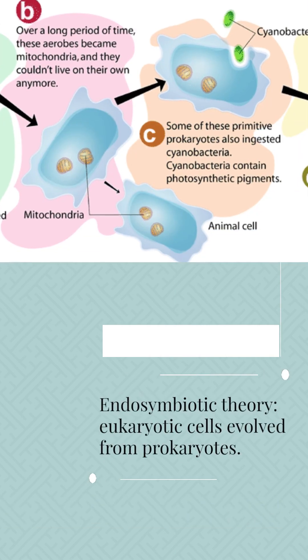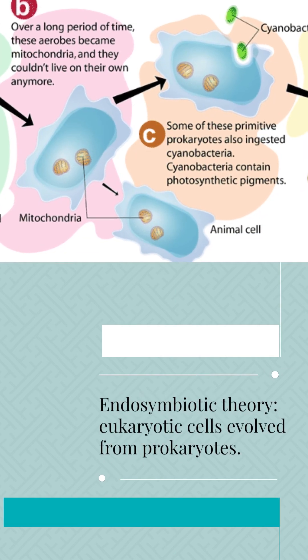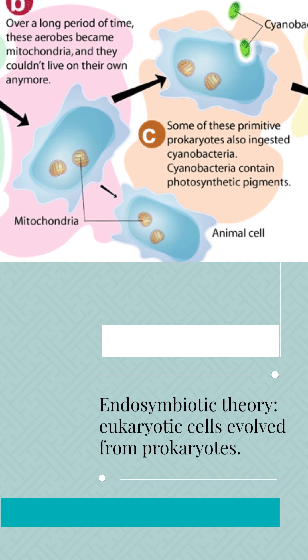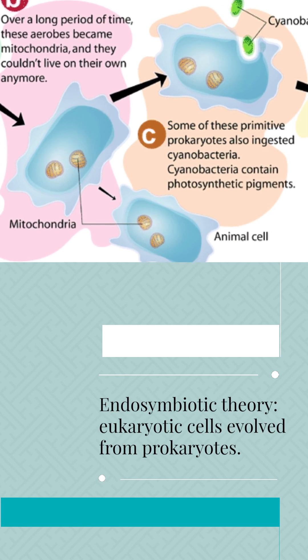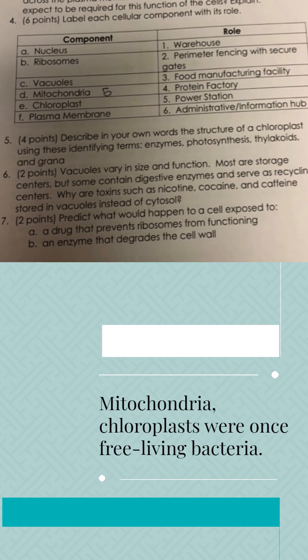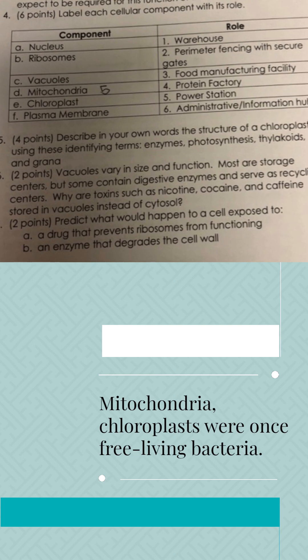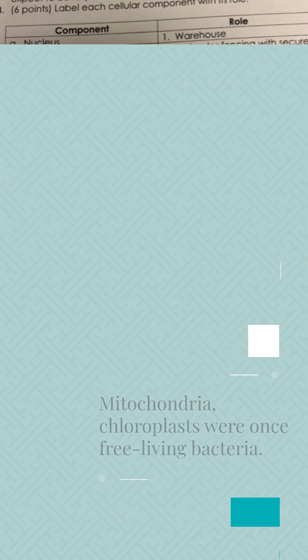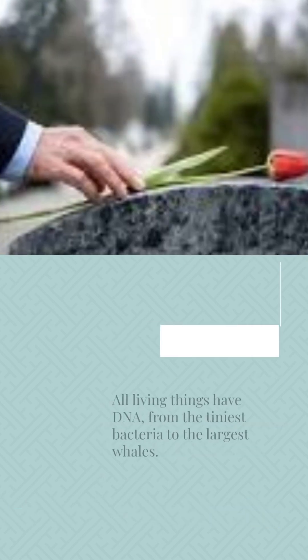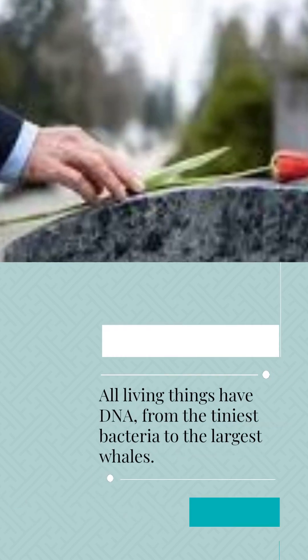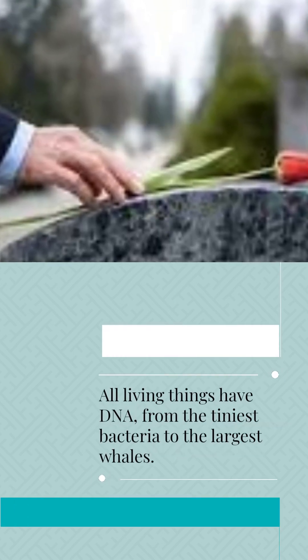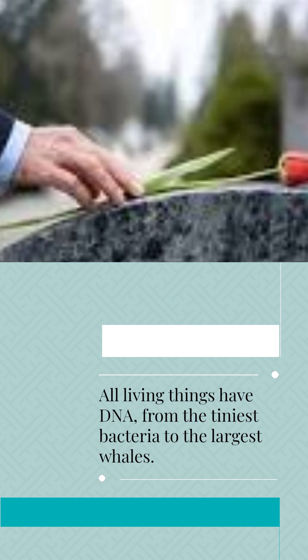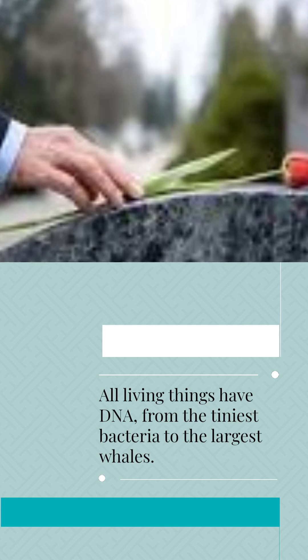Endosymbiotic theory: eukaryotic cells evolved from prokaryotes. Mitochondria and chloroplasts were once free-living bacteria. All living things have DNA, from the tiniest bacteria to the largest whales.